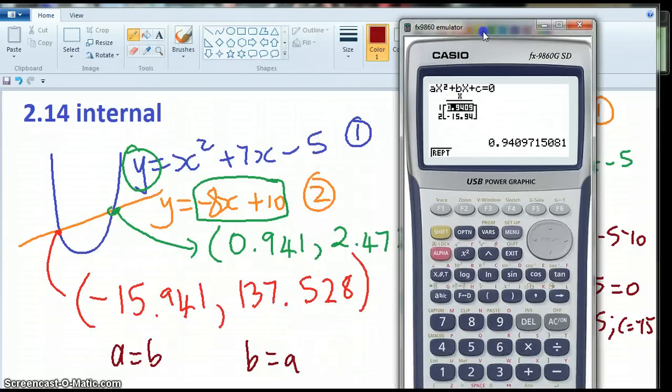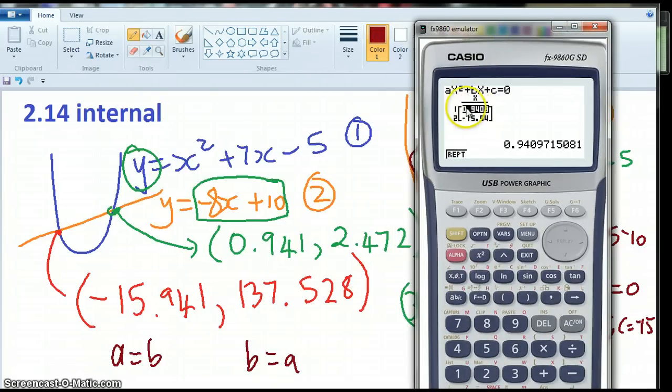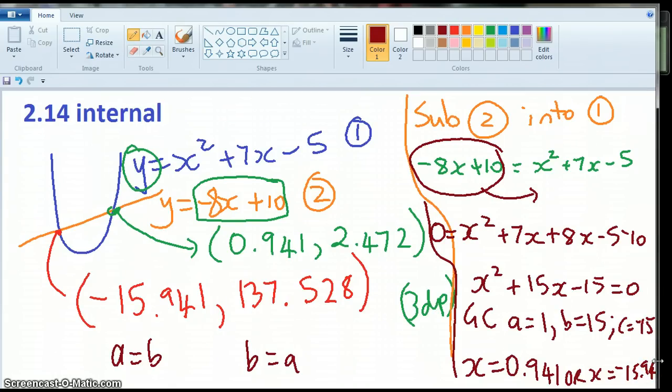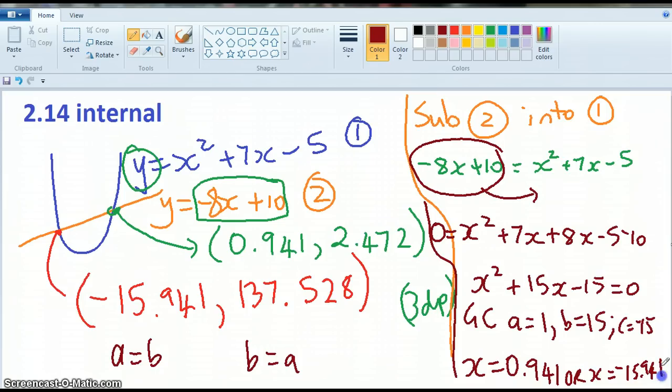I'm just going to match this. I've got the 941 which matches this point. And I've got the negative 15.94 which matches this point. So I'm agreeing with myself, so I'm thinking that my algebra was good. So x equals 0.941 or x equals negative 15.941.